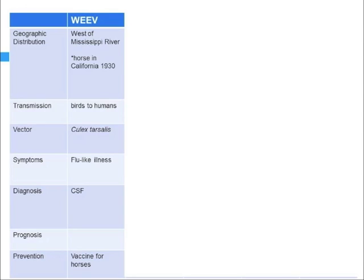Next is the La Crosse virus, first described in La Crosse, Wisconsin. It's found more east of the Mississippi River and in Appalachia, and is spread by a woodland Aedes mosquito. In this case, you would see more neutrophil predominance in the CSF, and on EEG it would mimic more of an HSV-type infection.